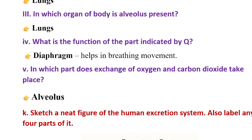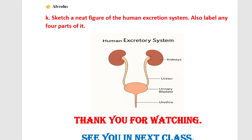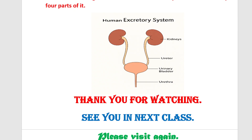Question: Draw a neat figure of the human excretory system and label any 4 parts of it. The excretory system includes the kidney, ureter, bladder, and urethra. Thank you so much for watching. If you like this video, please don't forget to like, share, and subscribe. Thank you.